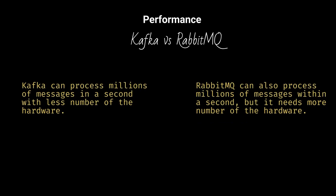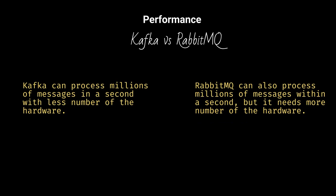Kafka can process millions of messages in a second with a lesser number of hardware. RabbitMQ can also process millions of messages within a second, but it needs more number of hardware.